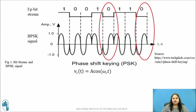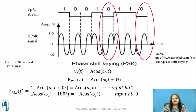The mathematical expression for the PSK signal is expressed as shown. If the carrier signal is given by A cos(ωc·t), then V_PSK(t) = A cos(ωc·t + θ), where θ is 0 degrees and 180 degrees for input bit 1 and 0 respectively. Thus V_PSK(t) = A cos(ωc·t) when the input bit is 1, and −A cos(ωc·t) when the input bit is 0.